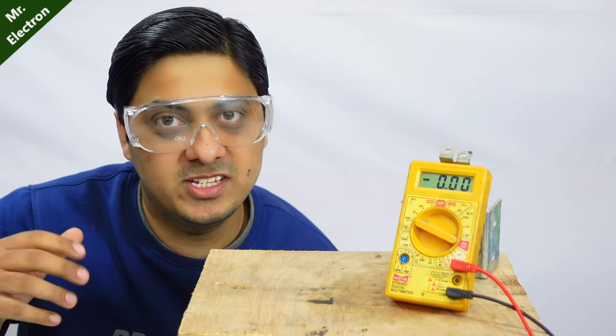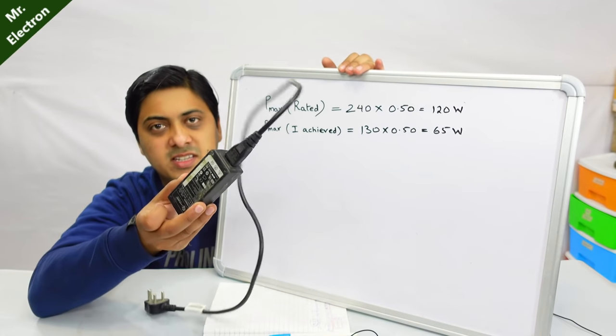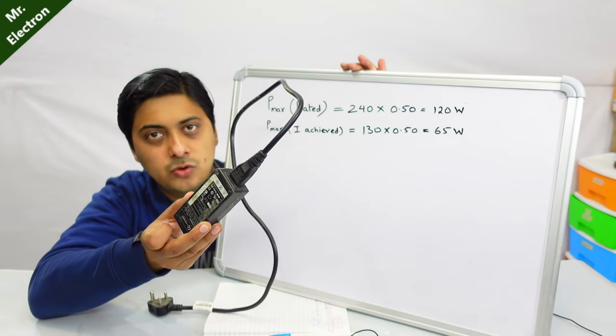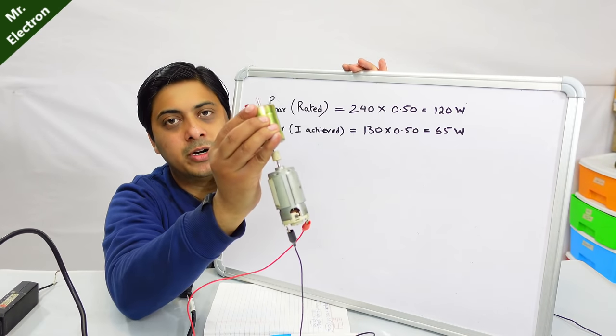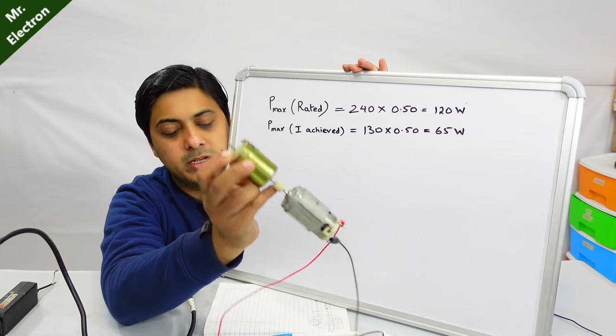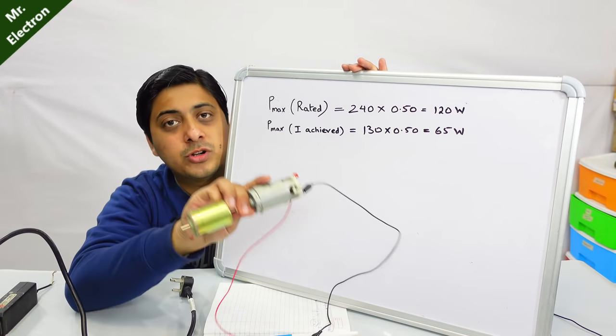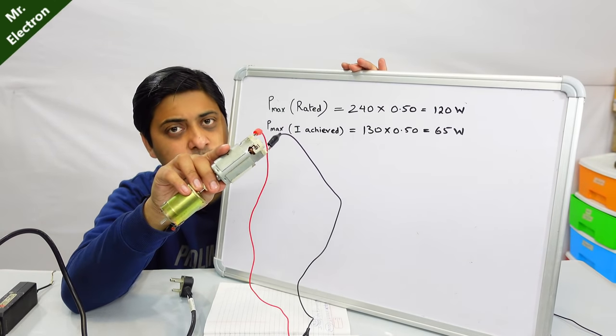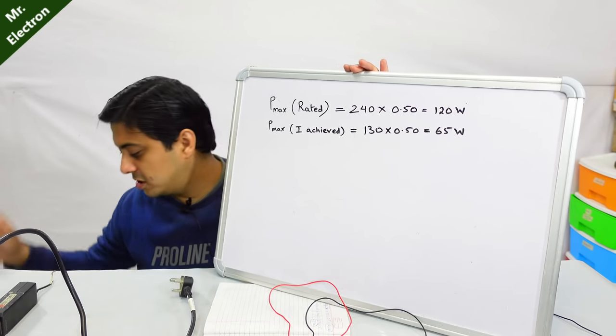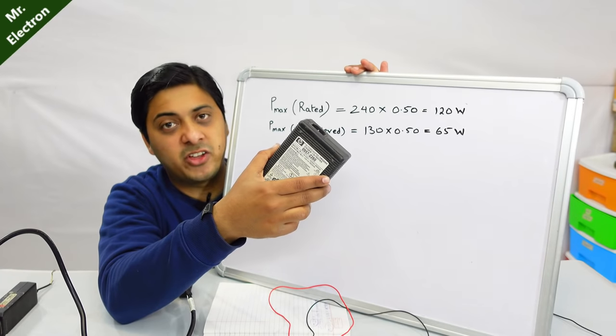This what you see is the laptop charger. Initially I was running this green motor, the driving motor, with the laptop charger, but now I'm going to force it to run at 35 volts. Laptop charger output is 20 volts and now I'm going to force it to 35 volts with the printer power supply.